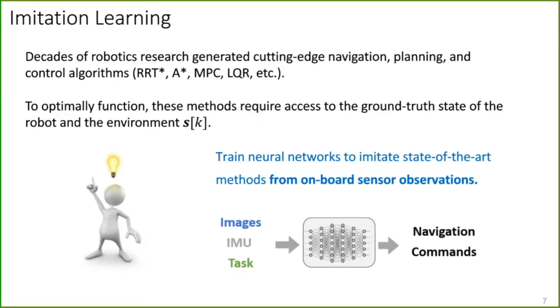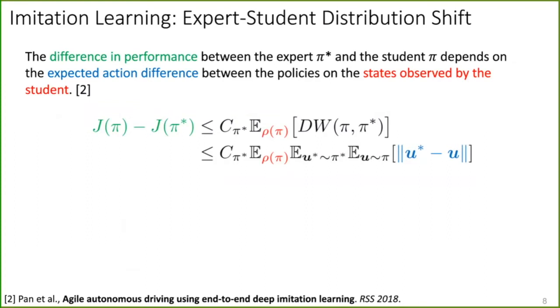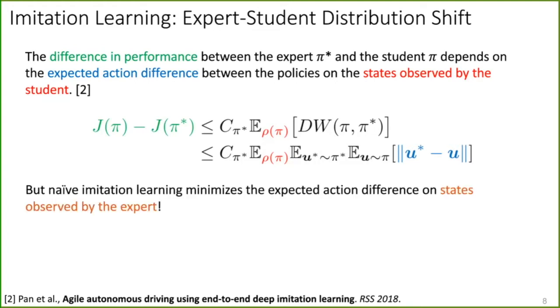But this idea has a problem, the so-called expert-student distribution shift. It can be shown that the difference in performance between the expert, like model predictive control or RRT star, and the student, the neural network, depends on the expected action difference on the states observed by the student. Why is this a problem? Because if we just collect data with our expert and then do imitation learning on this data, we will minimize the expected action difference on the states observed by the expert. Intuitively, if my expert only takes me to good states, our neural network will end up in bad states never observed at train time, and it will not know what to do.